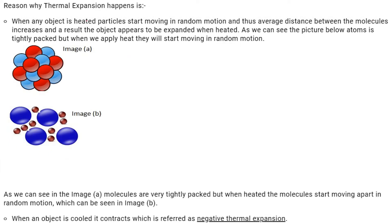Why does thermal expansion occur? When any object is heated, its particles start moving in random motion, and the average distance between molecules increases. As a result, the object appears to expand. When an object is cooled, it contracts, which is referred to as negative thermal expansion or contraction.